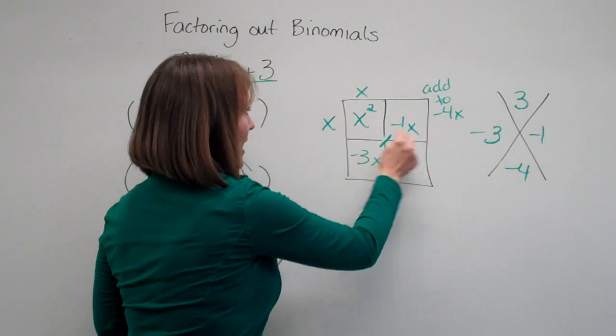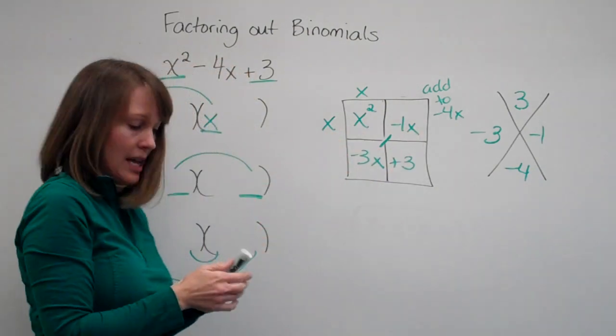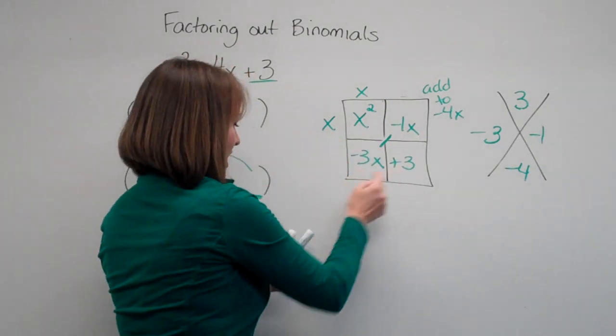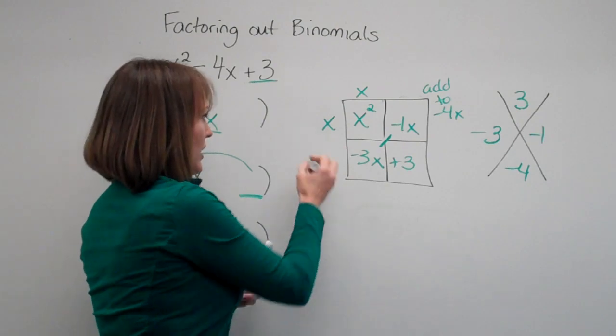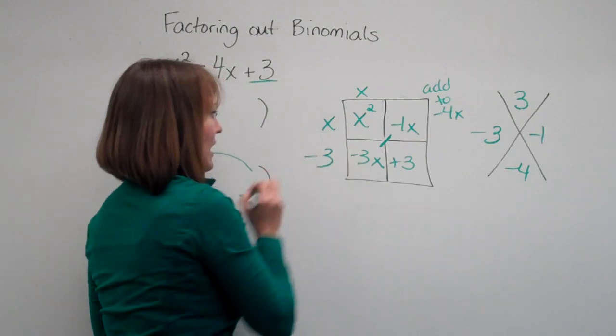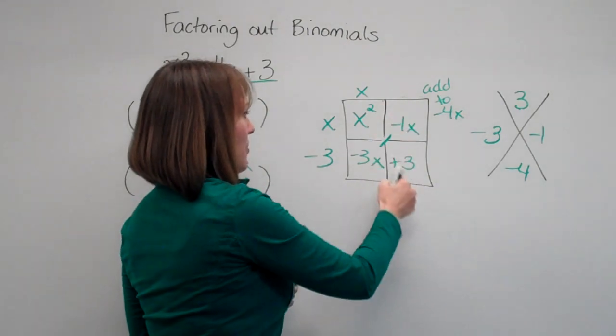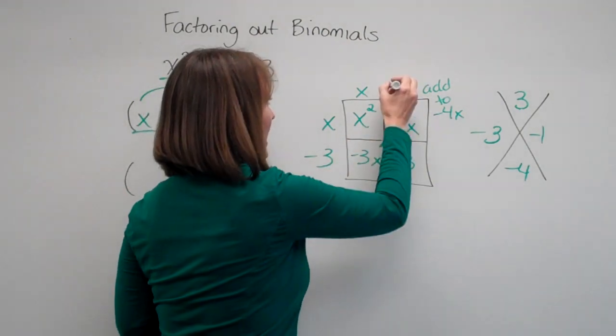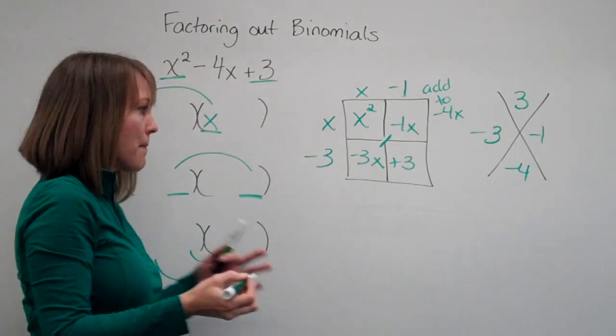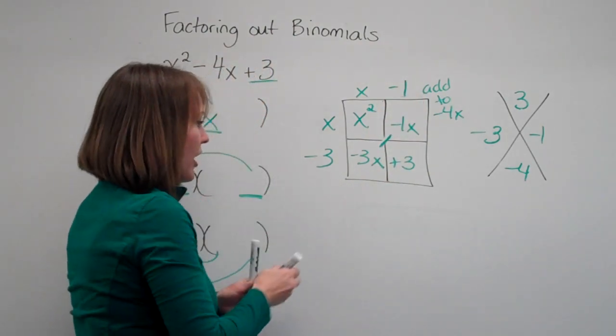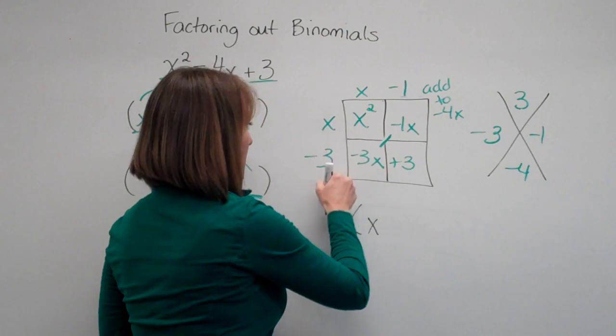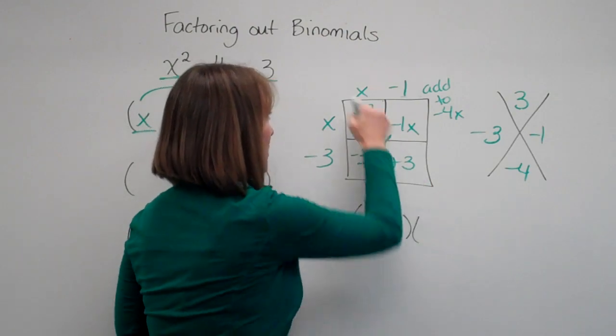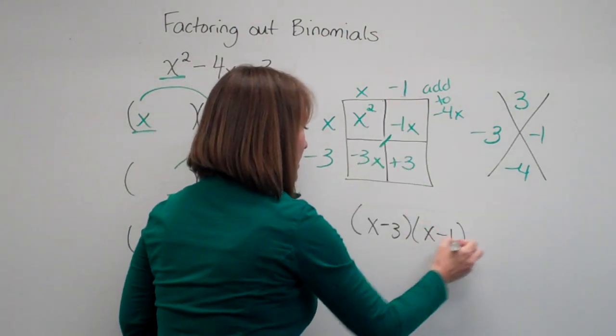This row, the only thing they have in common is an x. The greatest common factor in this row would be, they both have a 3 and this one's negative. The greatest thing they have in common in this row was nothing, so 1, and this is a negative. My binomial factors are x minus 3 times x minus 1.